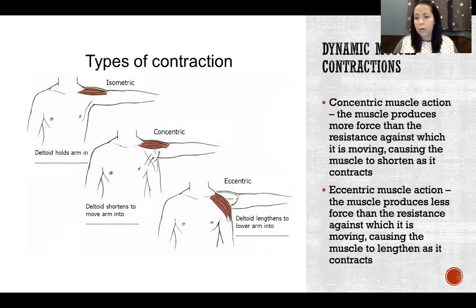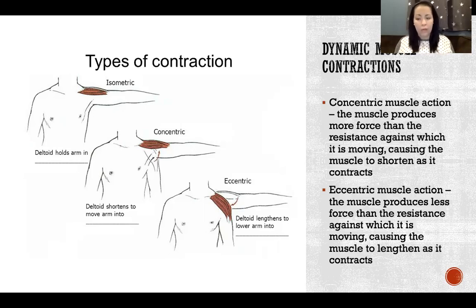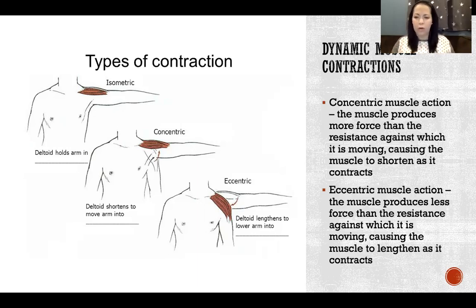So it's always sarcomere shortening that causes the contraction and the force production, but what the entire muscle is doing is not always shortening — it could be shortening, staying the same length, or lengthening.